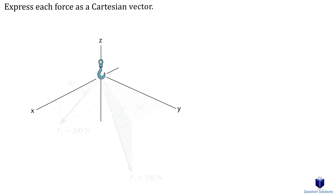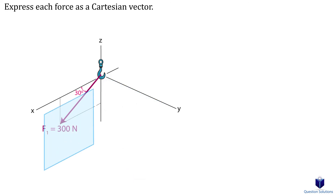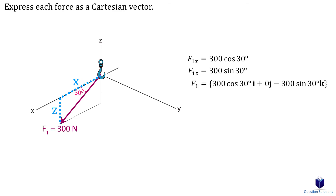Let's look at one last example covering how to break forces into components when we aren't given coordinate direction angles. For force F1, it's along the XZ plane, which means it has no Y component. We're given the angle between the force and the X axis, so we use cosine for the X component since it's the adjacent side, and sine for the Z component. Our Z component is on the negative Z axis, so it'll be negative.